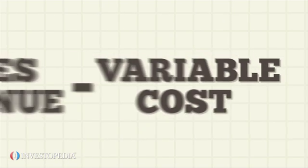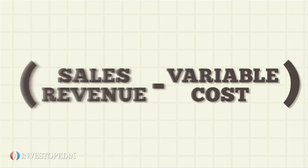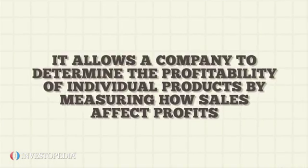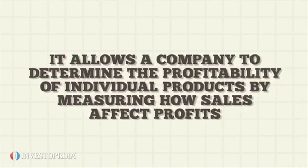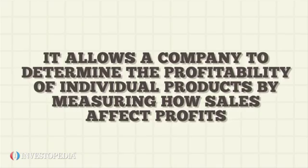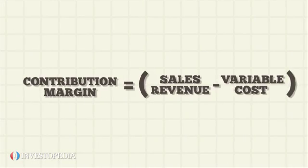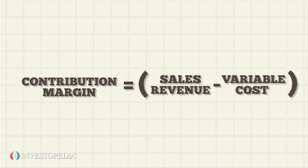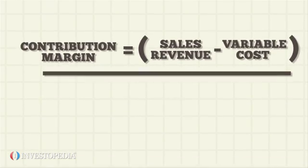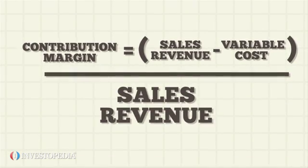Contribution margin is the difference between sales revenue and variable cost. It allows a company to determine the profitability of individual products by measuring how sales affect profits. In its ratio form, it is calculated as contribution margin divided by sales revenue.